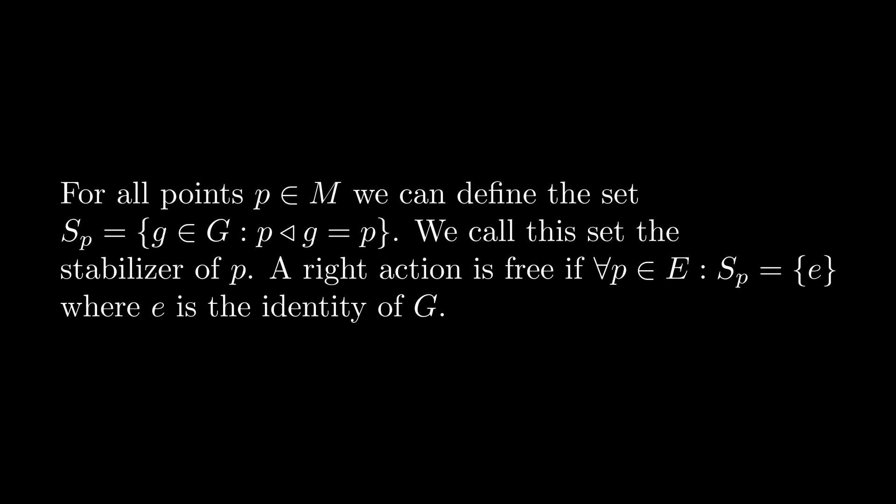We will talk about free space. The Principal G-bundle definition talked about our right G-space being a free space. To understand this, we define the following set Sp. Essentially it collects all the actions that do not move a point on the manifold. We call this set a stabilizer. Now, if for all points of the manifold their stabilizer just contains the identity of the group, then we have a free space.